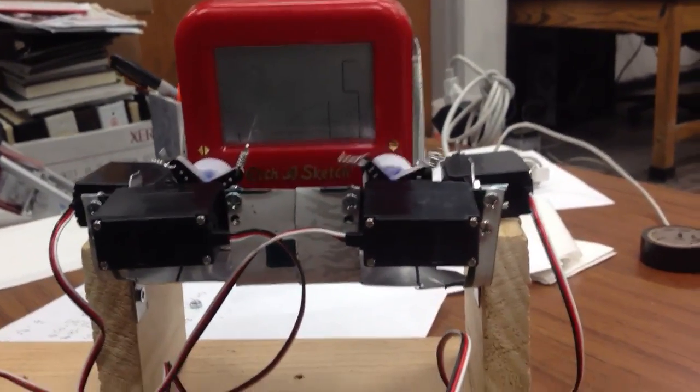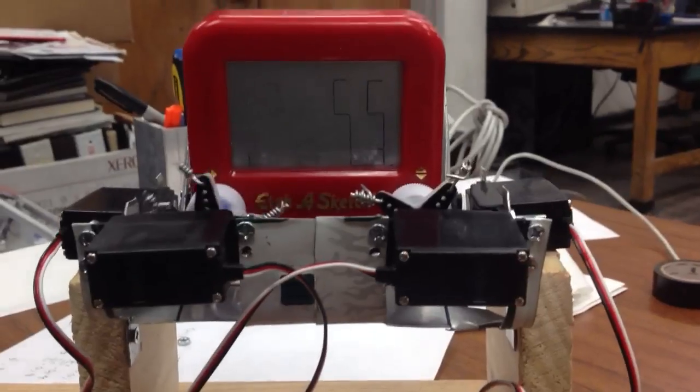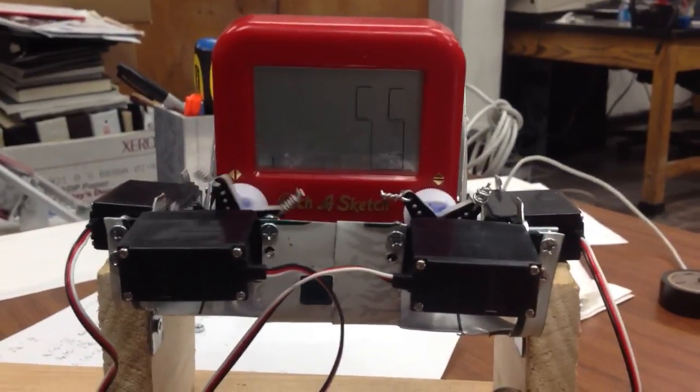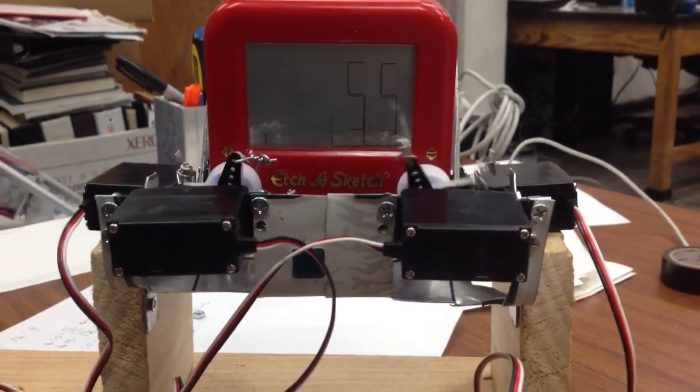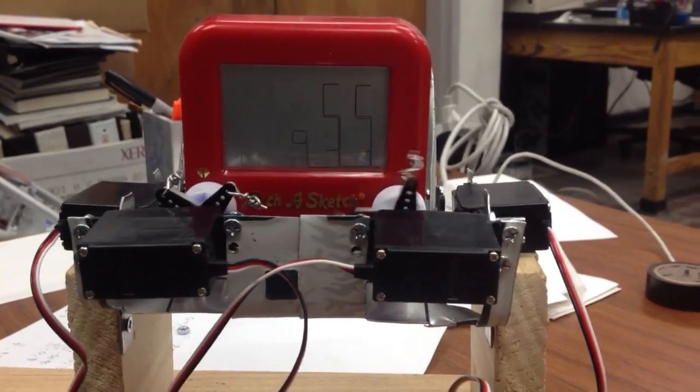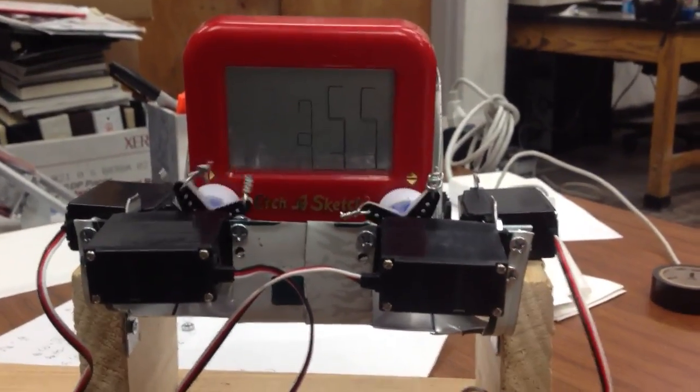So the ones on the side pretty much rotate it, rotate the Etch-a-Sketch forwards and back to kind of shake it to erase it, and then the two continuous servo motors on the front are turning the knobs of the Etch-a-Sketch so that they can draw what the time is on the Etch-a-Sketch.